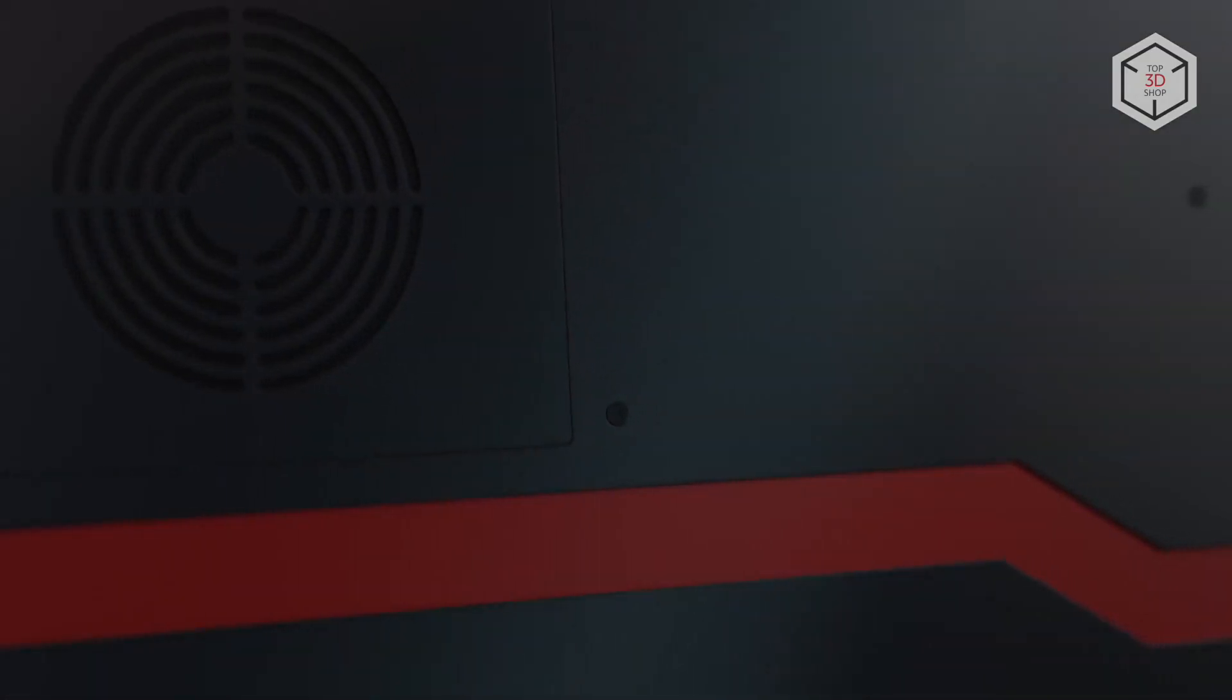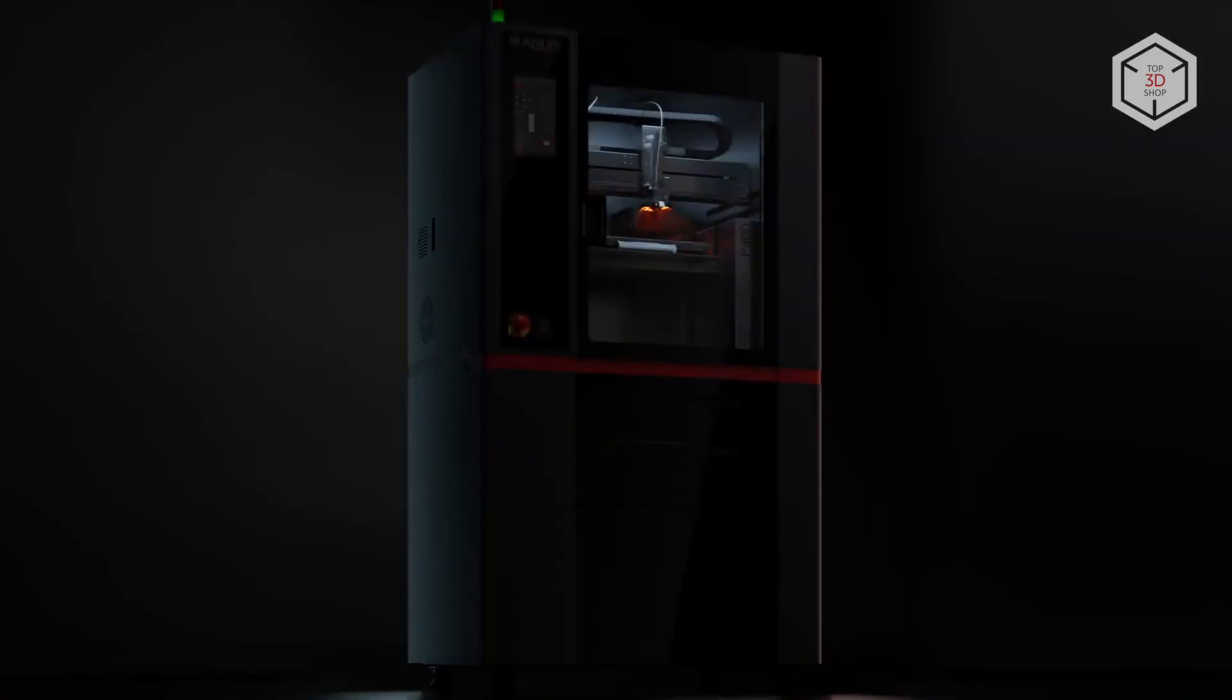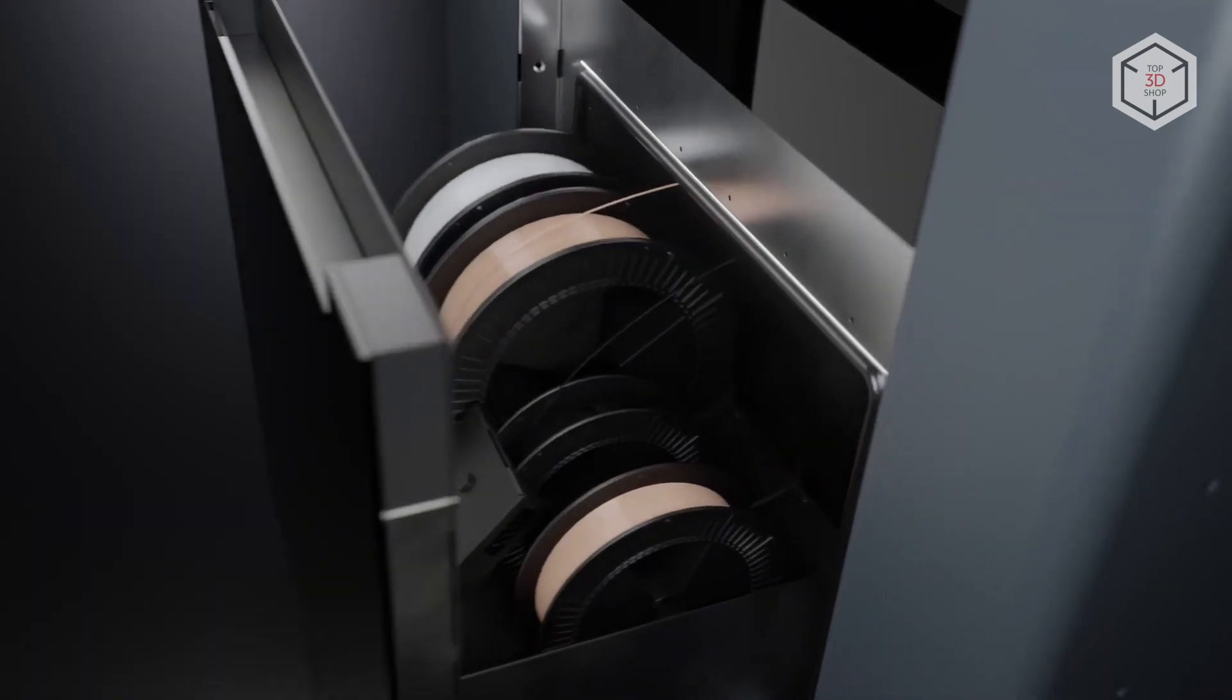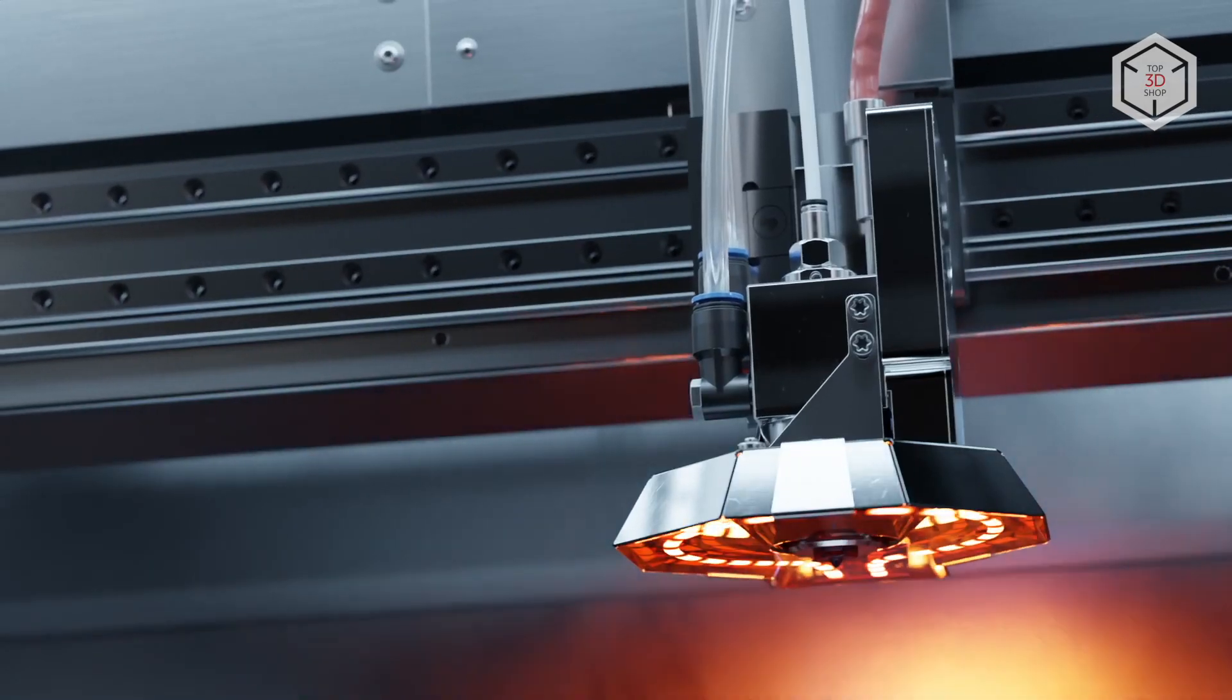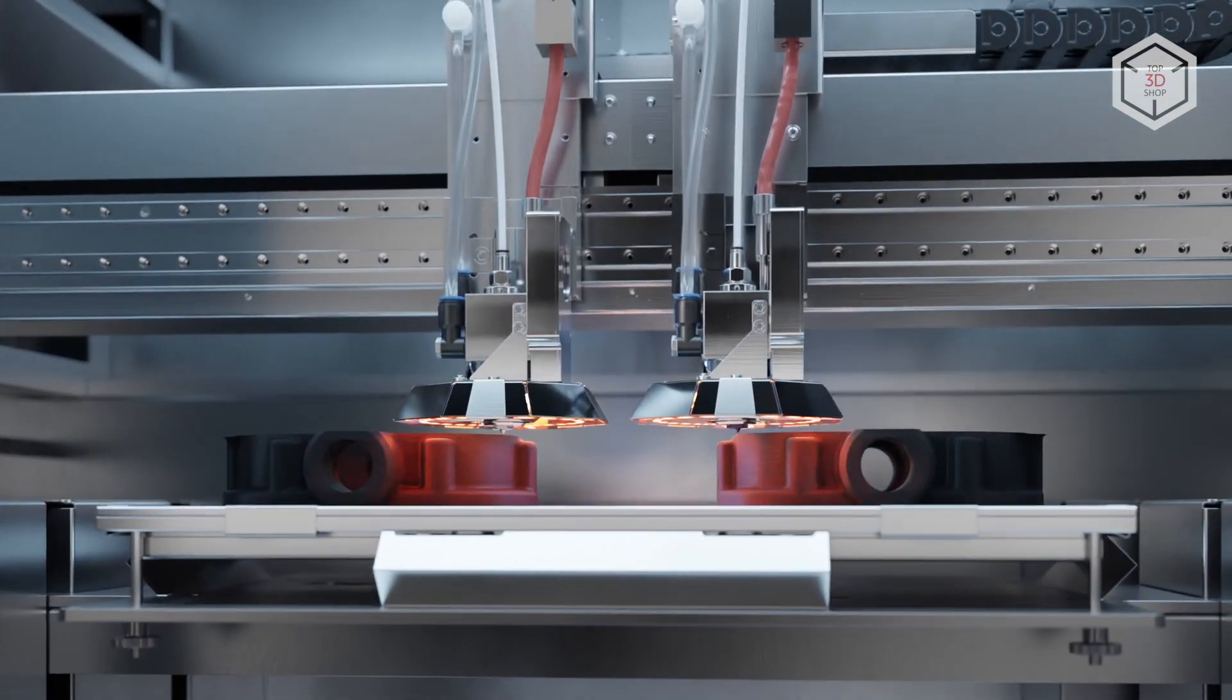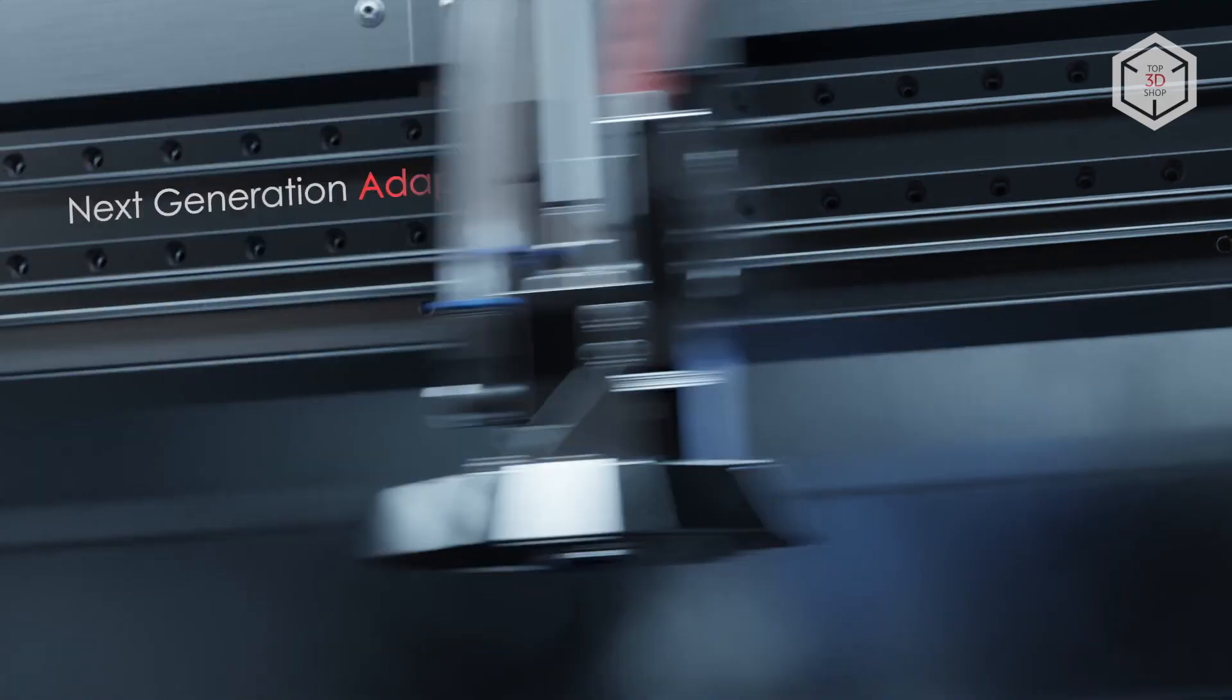Apium P400 is a device for printing with two materials equipped with a system of independent dual extrusion called IDEX. The design of the flagship model uses premium components. The model is equipped with an optical calibration system and includes an integrated module for filament drying. The printer features maximum extruder temperature of 540 degrees Celsius, a print bed heated up to 200 degrees, print chamber of 400 by 300 by 300 millimeters, and layer thickness from 50 to 600 microns.